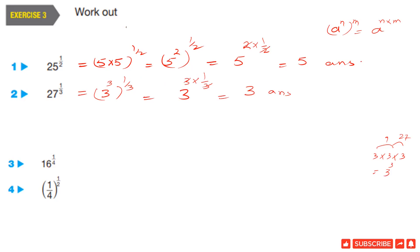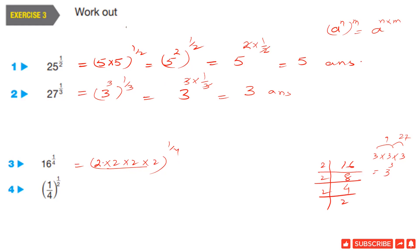Question 3: 16 power 1 by 4. As we know, 16 is 2 times 2 times 2 times 2, so 16 power 1 by 4 equals 2 power 4, bracket 1 by 4. We then write 2 power 4 times 1 by 4, the 4 cancels, and we get 2 as the answer.